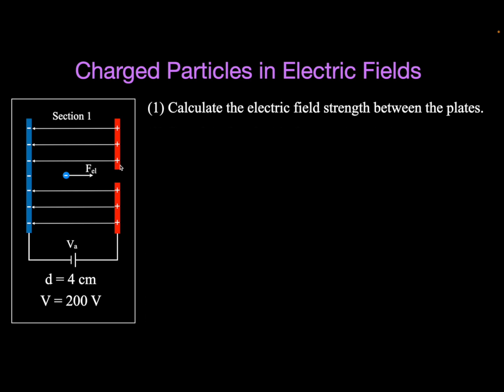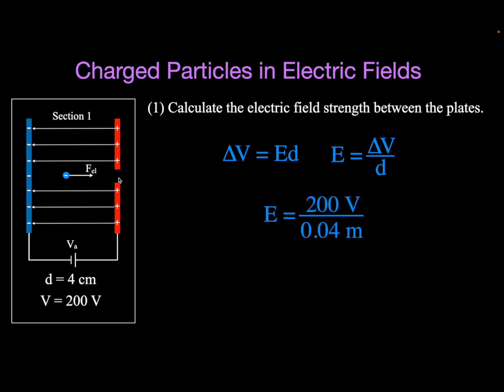We can use the equation for parallel plates: voltage between the plates equals electric field strength times distance. The electric field strength is therefore the voltage divided by the distance. Plugging in 200 volts divided by 0.04 meters — converting centimeters to meters — we get that the electric field strength is 5000 volts per meter. That's the electric field strength between those plates.